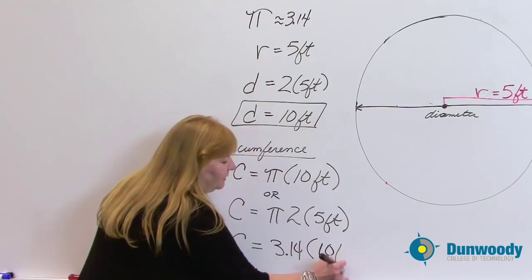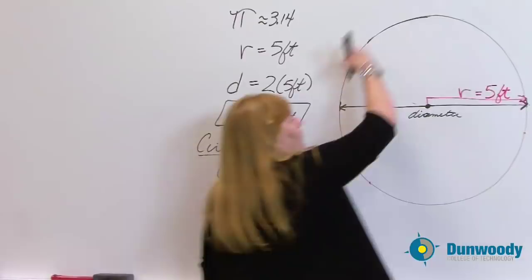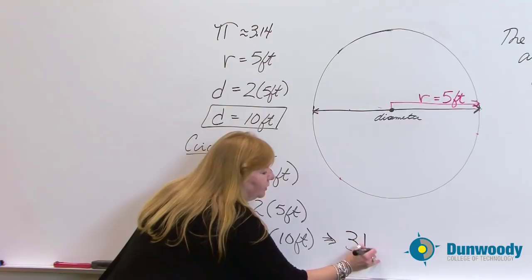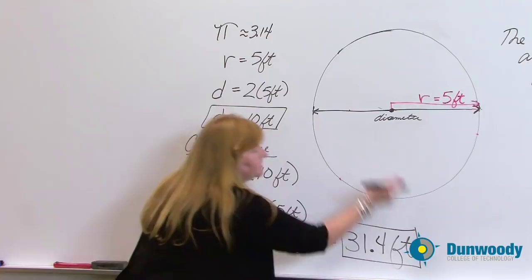And that will give us circumference, which is the distance walking around this circle. And 10 times 3.14 gives you 31.4 feet. And that is the distance around the circle that we're looking at.